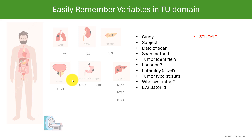The variables used to store this information are: STUDYID for the study, USUBJID for the subject, and TUDTC for the date of scan — following the SDTM convention of a DTC suffix for date variables in the TU domain. TUMETHOD stores the scan type, whether CT scan or MRI scan. The tumor identifier values such as T01, T02 through T03 and NT01 through NT06 are stored in the variable TULINKID, with one row created per tumor identifier.